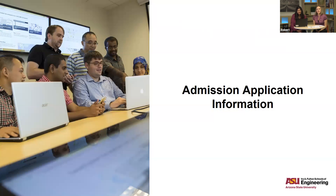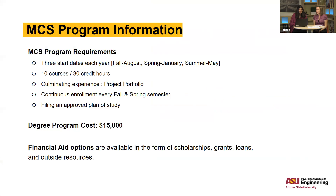Now, admissions requirements. The program is 30 credit hours — 10 classes. The cost is $15,000, charged as you take classes: $500 per credit hour or $1,500 per course. If you only take one course, you're only charged $1,500. We have three starts a year: fall, spring, and summer. Our upcoming start is summer, beginning May 20th.